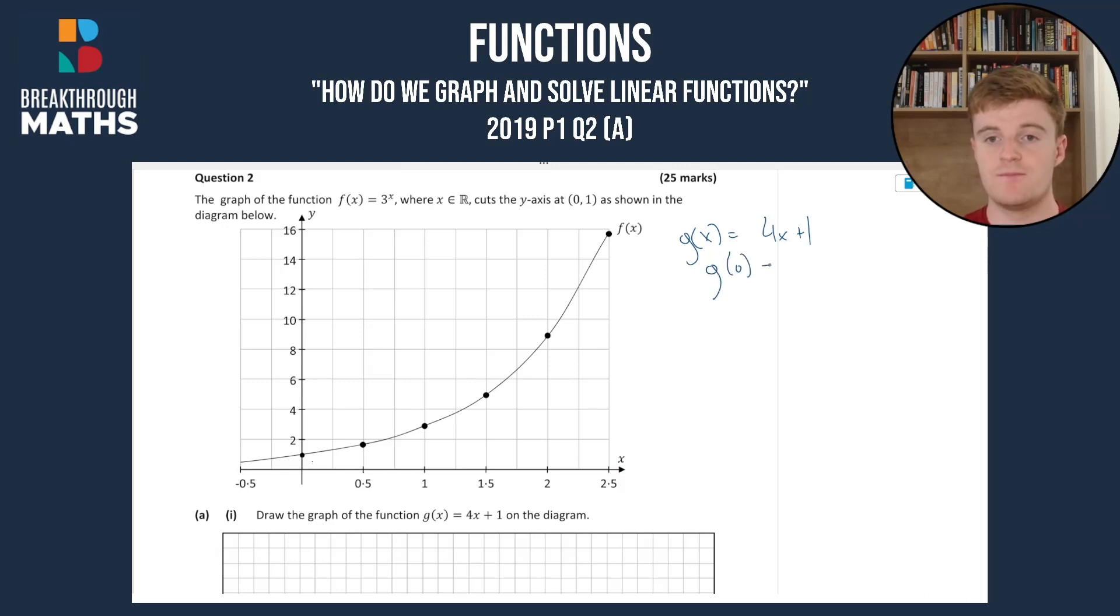So g(0) = 1, because 4 times 0 plus 1 is 1. g(0.5) is going to be 3. g(1) is going to be 5. g(1.5) is going to be 7. And I hope you can see, because it's a linear function, every 0.5 that you go across on the x-axis, you're going to increase your y-value by 2.